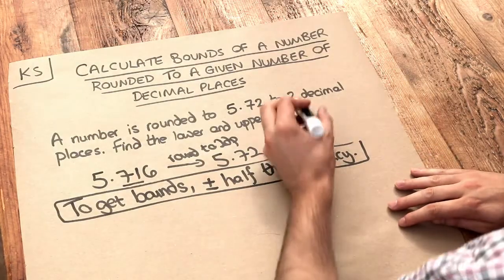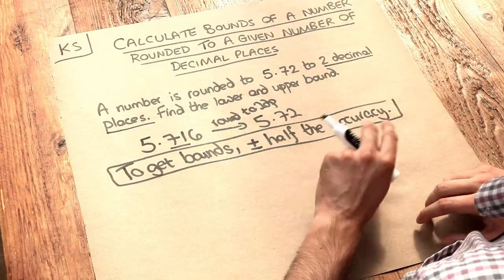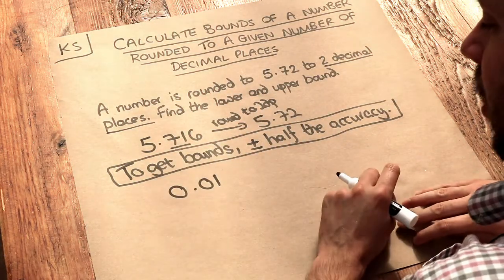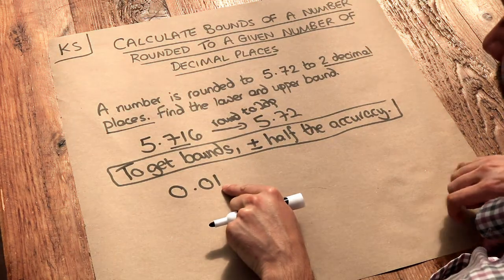Now in this particular case the accuracy is we're rounding it to two decimal places. Now we could think of that accuracy as 0.01 because we're rounding to the nearest a hundredth if we're rounding to two decimal places.